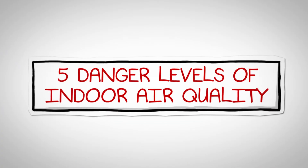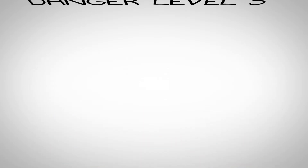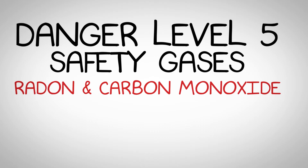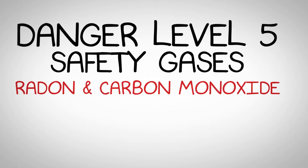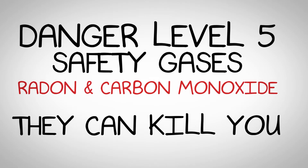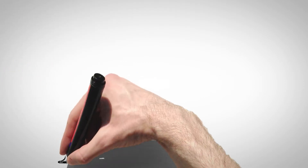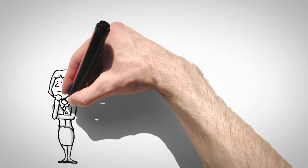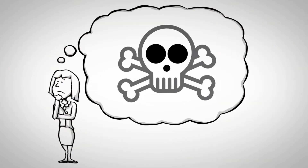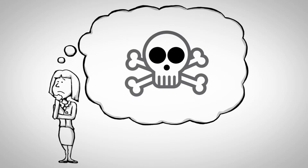Let's take a few minutes to dissect these five danger levels and explain exactly what we're dealing with in our homes. Danger level five is safety gases. Radon and carbon monoxide are the two safety gases. They are classified as level five because they can actually kill you. Both gases are odorless, tasteless, invisible gases with a potentially deadly impact on your family.